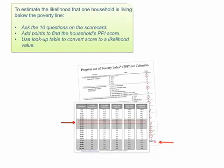The PPI lookup table is then used to convert the score to the likelihood that the household is living below a variety of poverty lines. This likelihood value is expressed as a percent.